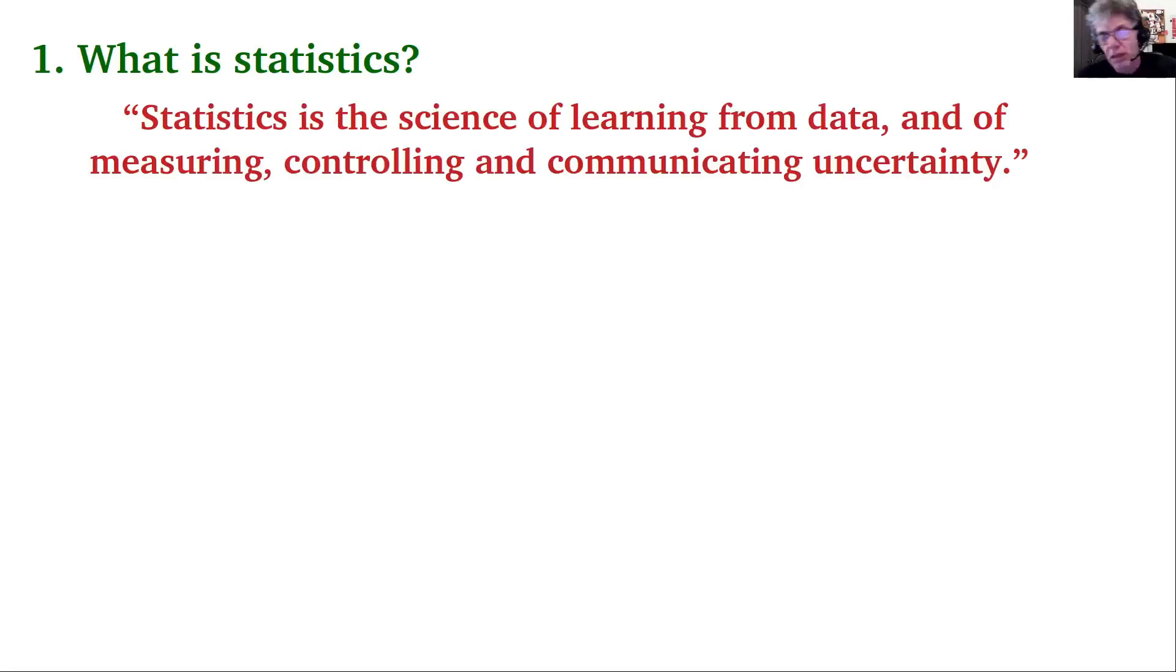The first article of the journal Annual Review of Statistics provides seven definitions of this science, of which this is the one I like best. It says statistics is a science of learning from data and of measuring, controlling, and communicating uncertainty.